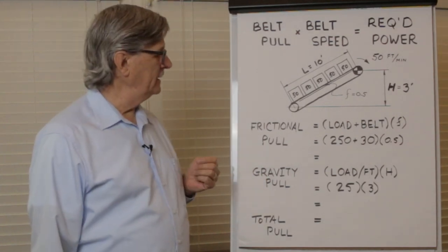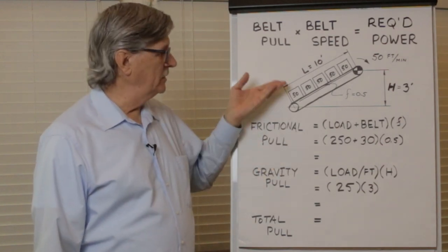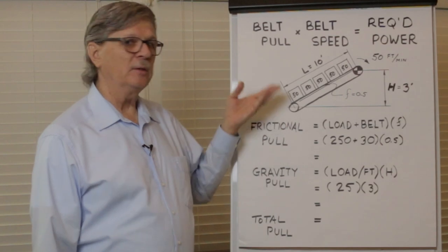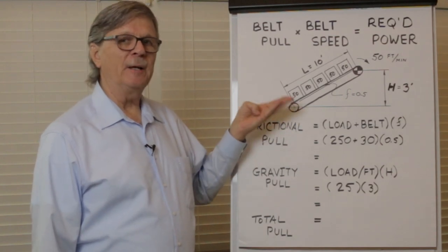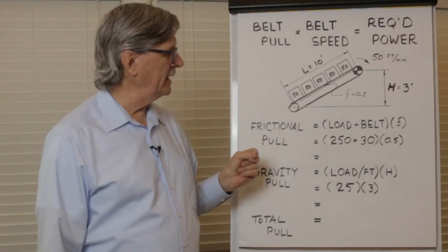To calculate the amount of pull required to overcome friction, we take the weight of the total load on the belt plus the weight of the belt and multiply that against the frictional coefficient between the bottom of the belt and the top of the slider bed.